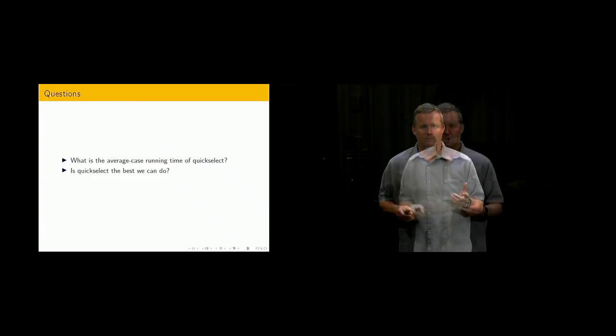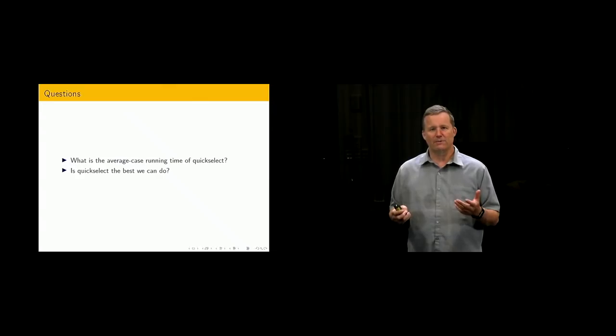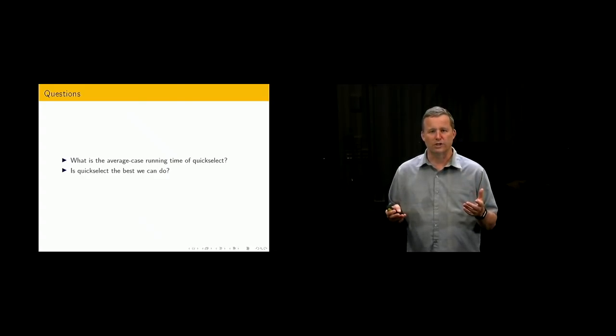We've got two main questions for you. First one: we've described the running time in terms of a recurrence - it's similar to quicksort. We've seen the solution of the quicksort recurrence. Now try and solve the quickselect recurrence, which is a bit different, and see if you can find out the order of growth of the solution. How long does it take for quickselect to run?